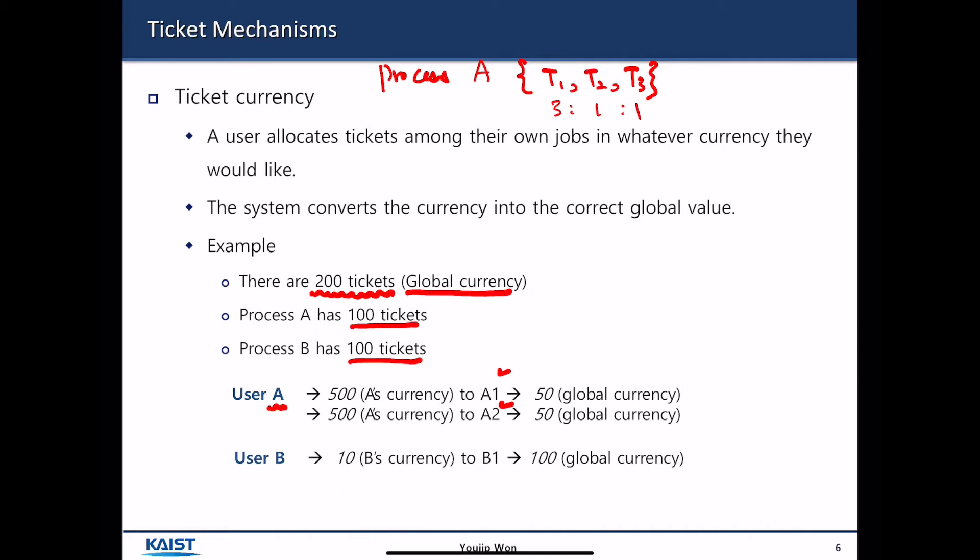And user A defines 1000 tickets on its own currency and gives 500 to A1 and then 500 to A2. It means that whatever CPU cycles user A receives, it intends to divide its CPU cycles among two threads in 50-50 manner.